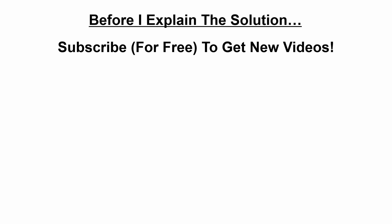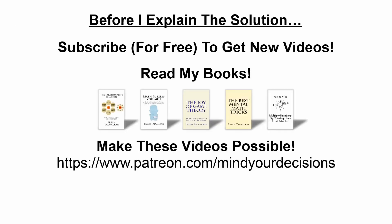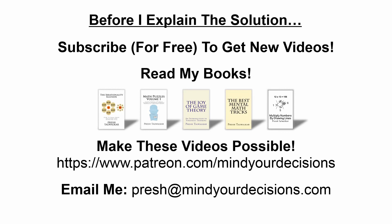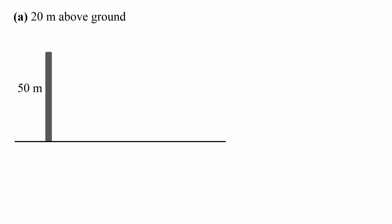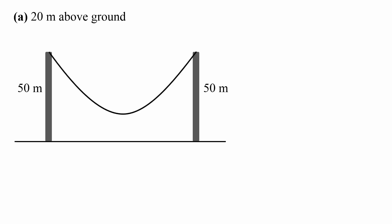So let's solve the case of 20 meters above the ground. We have the ground and we have two poles of 50 meters each, and we have a hanging cable that's 80 meters long. The center of this cable is 20 meters from the ground and we want to solve for the distance between the two poles.